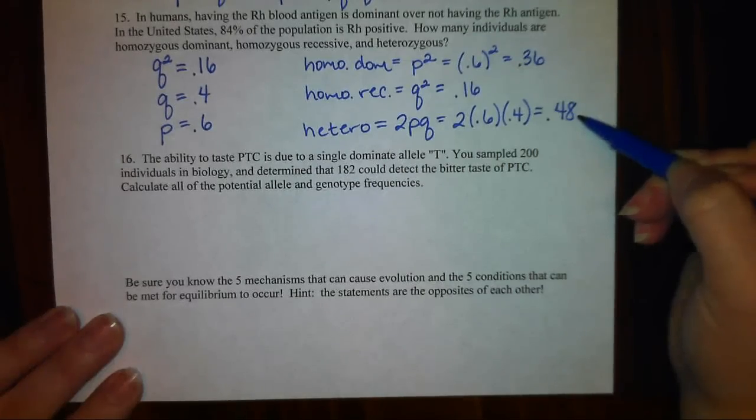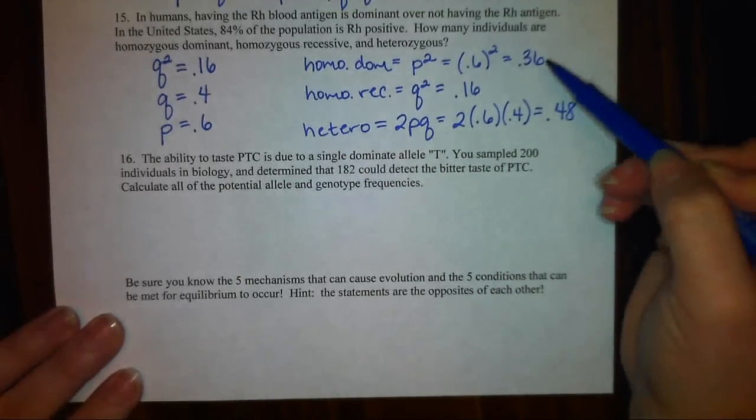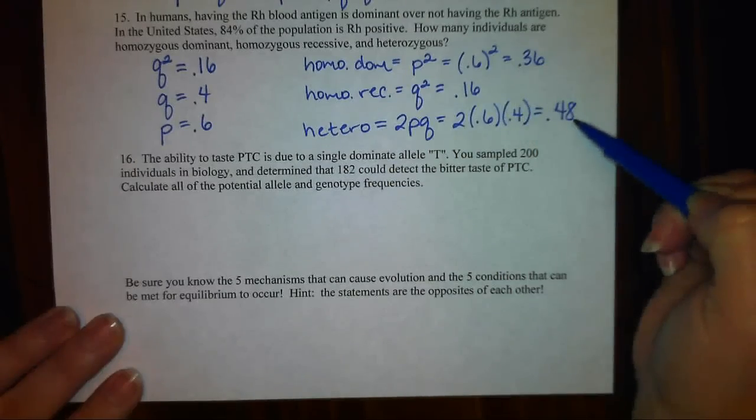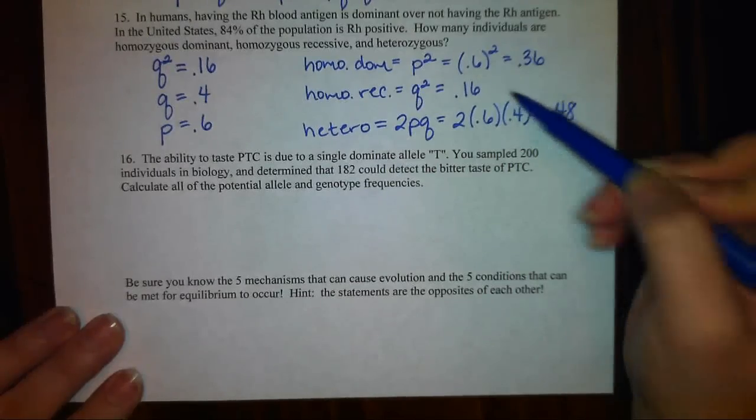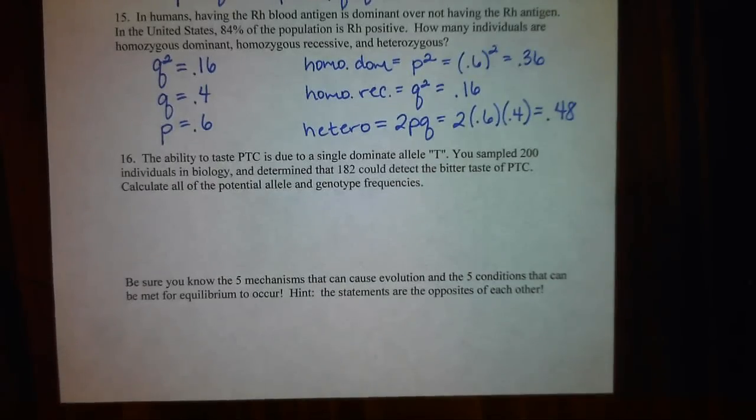I can check my work because these three categories should add up to 1. If my population is homozygous dominant, heterozygous recessive, or heterozygous, then these three categories need to add up to 100% of my population.